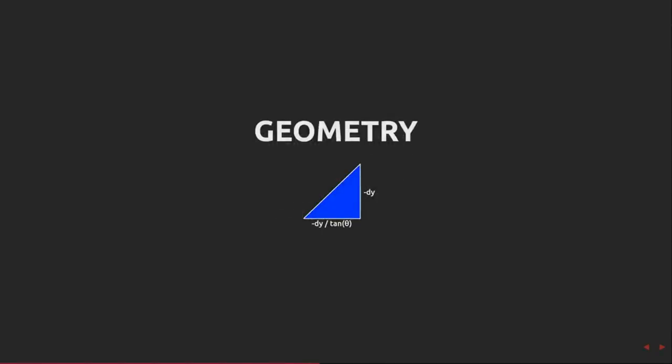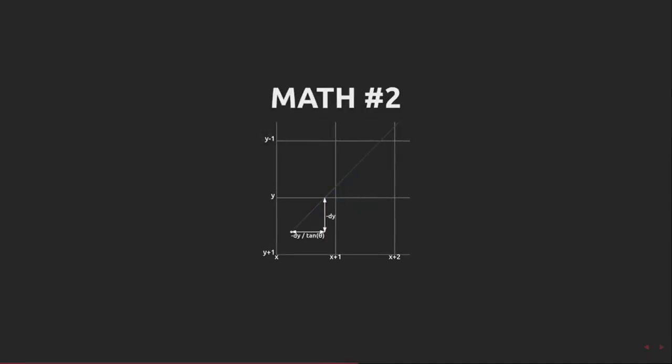Looking at the ray in question, we can use trigonometry to determine that the distance along x must be minus dy over tan theta. Here's that shown on our map grid. This finds the first point of intersection.